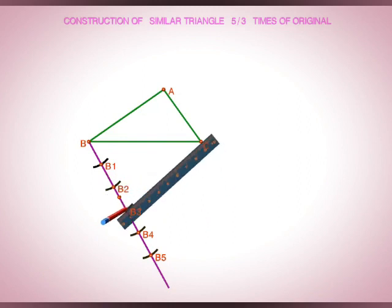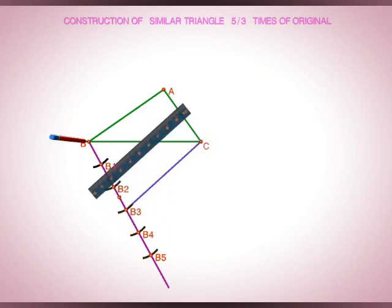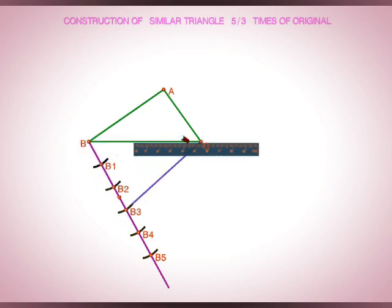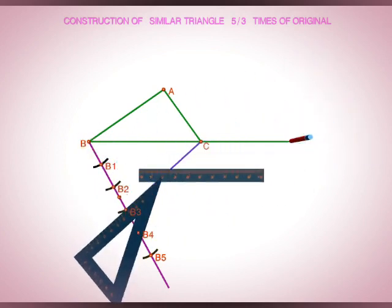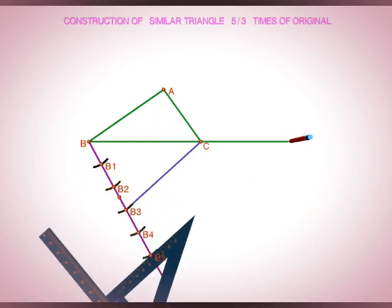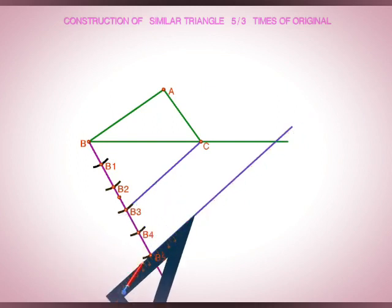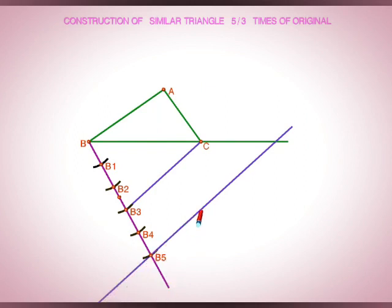Now join B3C using the scale and extend the B3C line up to some extent. And draw a parallel line to B3C through B5 which intersects the BC extended line at C1.